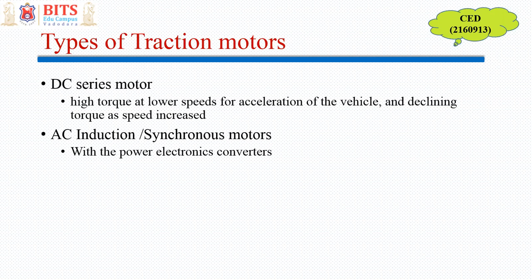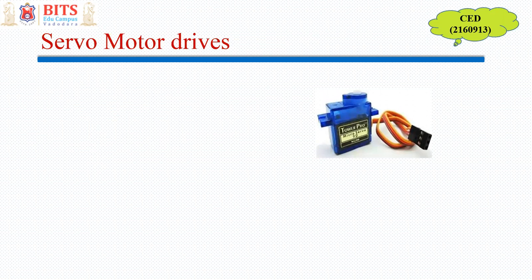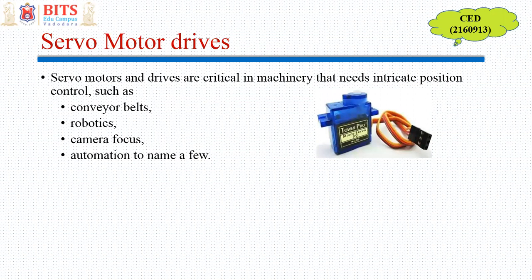That covers traction motor drives. Now we will introduce servo motor drives and conclude that topic tomorrow. Servo motors are used for motion control in robotics and other applications. Servo motors and drives are critical in machinery that needs intricate position control — such as conveyor belts, robotics, camera focus, and automation. Where very precise angle control is required, servo motor drives are used.